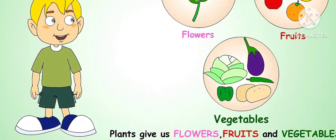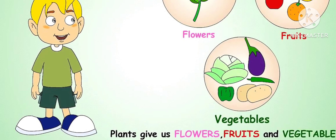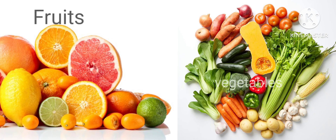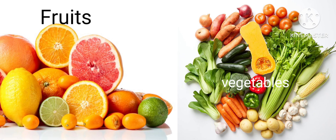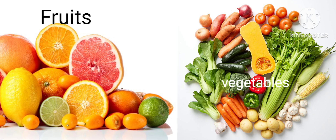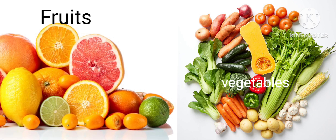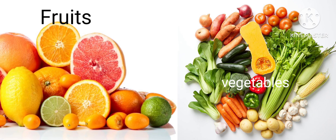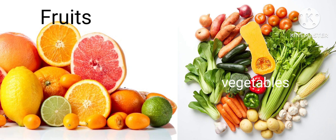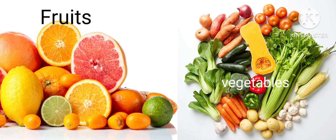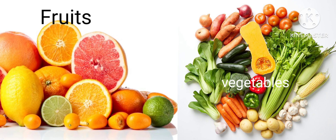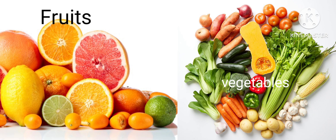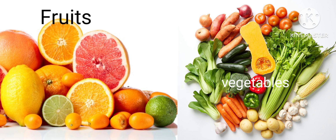Fruits and Vegetables. Mango, watermelon, and lemon are examples of fruits. Potato, carrot, etc. are examples of vegetables which we get from different plants.